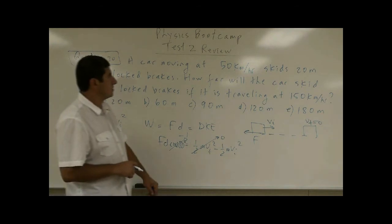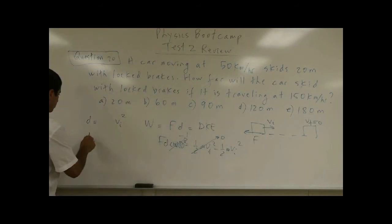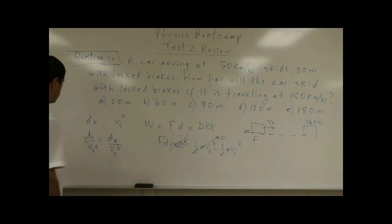So we can make a ratio. We can say D1 over V1 squared is equal to D2 over V2 squared. Since distance is proportional to velocity squared, D1 over V1 squared, D2 over V2 squared.